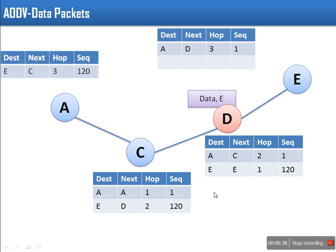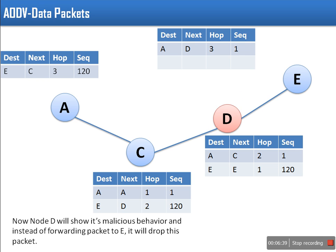So this is gray hole attack — on receiving a data packet it simply discards it. This is gray hole attack in AODV. Thank you for watching.